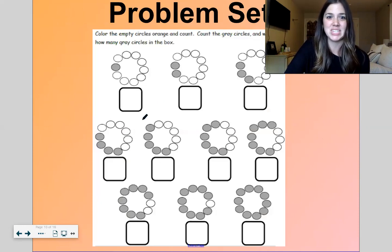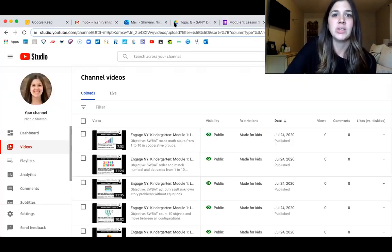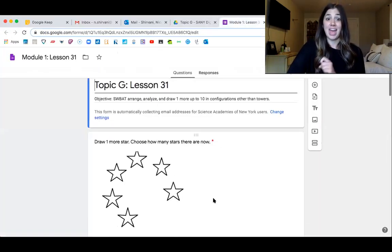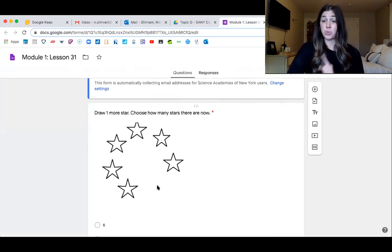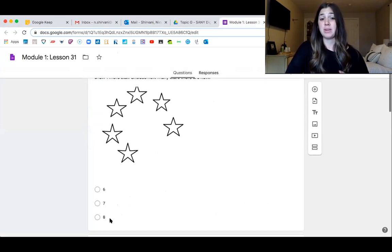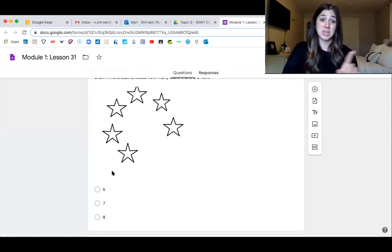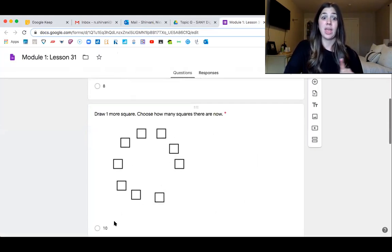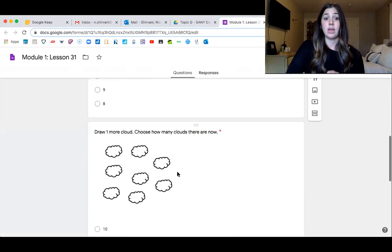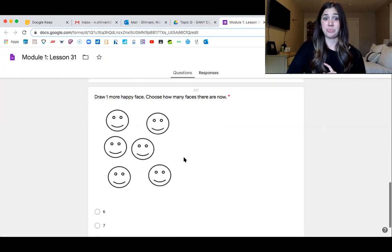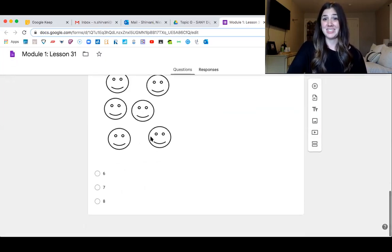Let me show you our problem set for the day. You are going to work on counting. So draw one more star or just think how many would one more be and choose how many there are now. So you'll have to count these first and think how many would one more be. Count the squares. How many would one more square be total? Count the clouds. How many would one more cloud be total? Same thing with the faces.